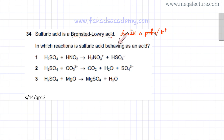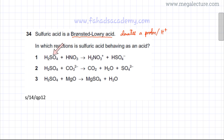In which reaction is sulfuric acid behaving as an acid? We're looking for reactions in which it donates an H⁺ ion. In the first reaction, H₂SO₄ becomes HSO₄⁻¹ on the other side, meaning it has lost — or donated — one H⁺ ion. So option 1 is correct.